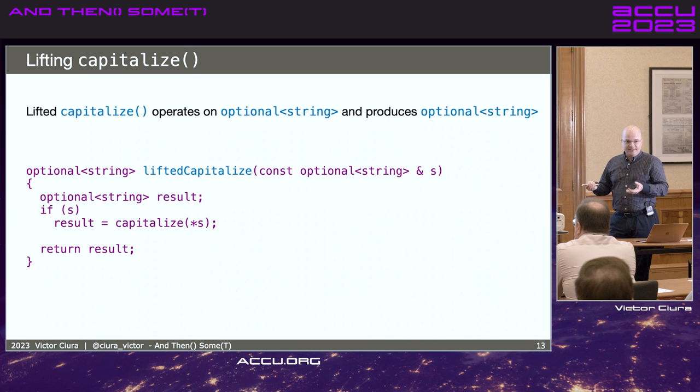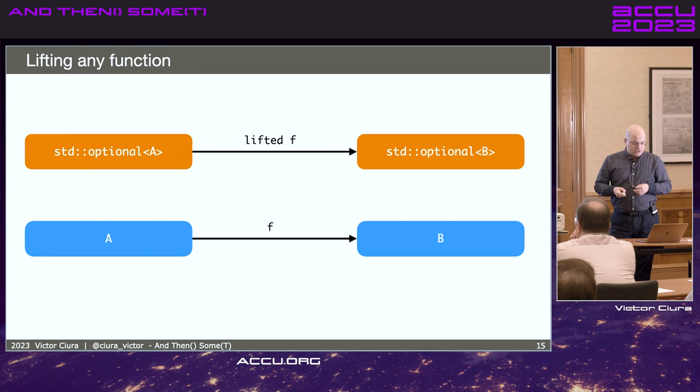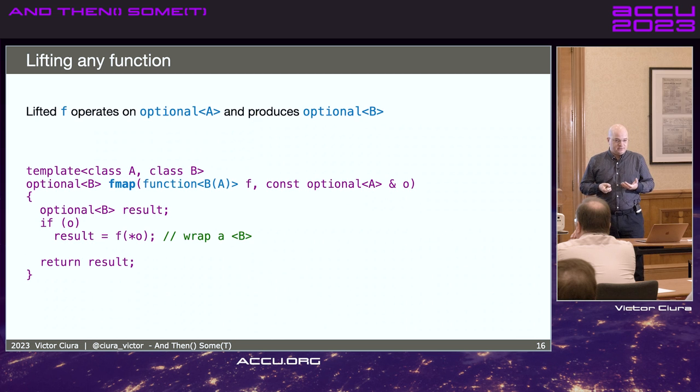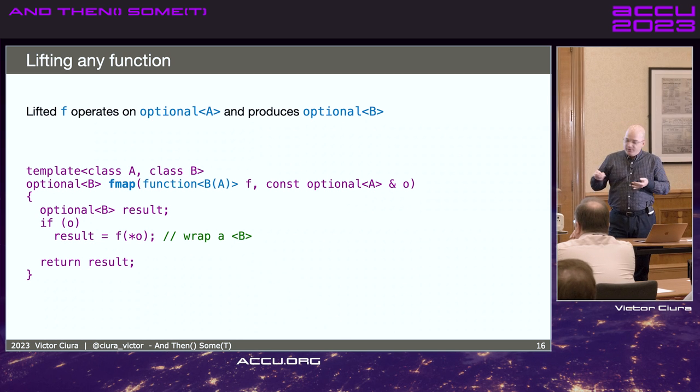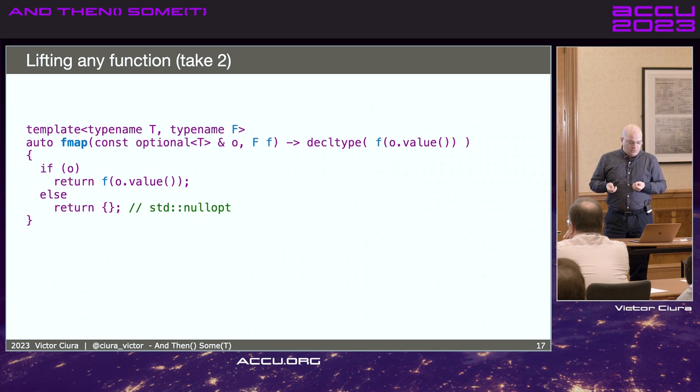One mechanism that we can use is lifting functions, so building higher order functions. For example, a lifted capitalize that would encapsulate this operation in a higher order function. Think of it of changing the co-domain of the function rather than having a function from string to string, having a function from optional string to optional string. So changing the co-domain of the operation. And we can do this lifting operation for any function. And one such mechanism is a well-known one, fmap. And we can have a very simple implementation of an fmap-like facility, which uses a function from a to b, as we can see there, and takes an optional of a, which is the input, and yields an optional of b. Or if you prefer to stay away from standard function, you can do something like this.